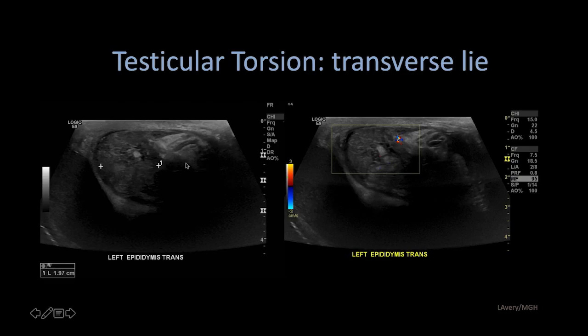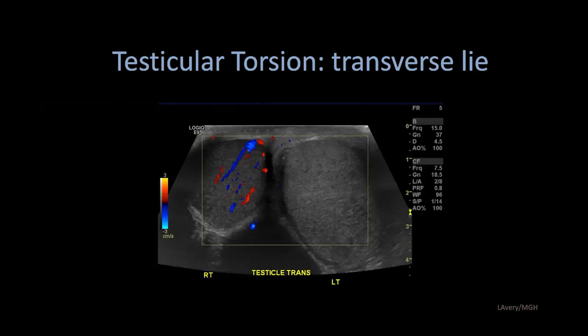The left epididymis is again enlarged and heterogeneous in configuration, but without increased blood flow — an enlarged heterogeneous epididymis without blood flow. On the buddy view, there is lack of blood flow in the left testicle, consistent with testicular torsion.